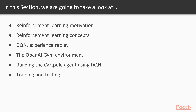Then we are going to learn about the OpenAI gym environment. This is the environment in which we will train and execute our agent. Then we are going to actually code it up in PyTorch — we will build the agent and then we are going to see the training and testing of it.